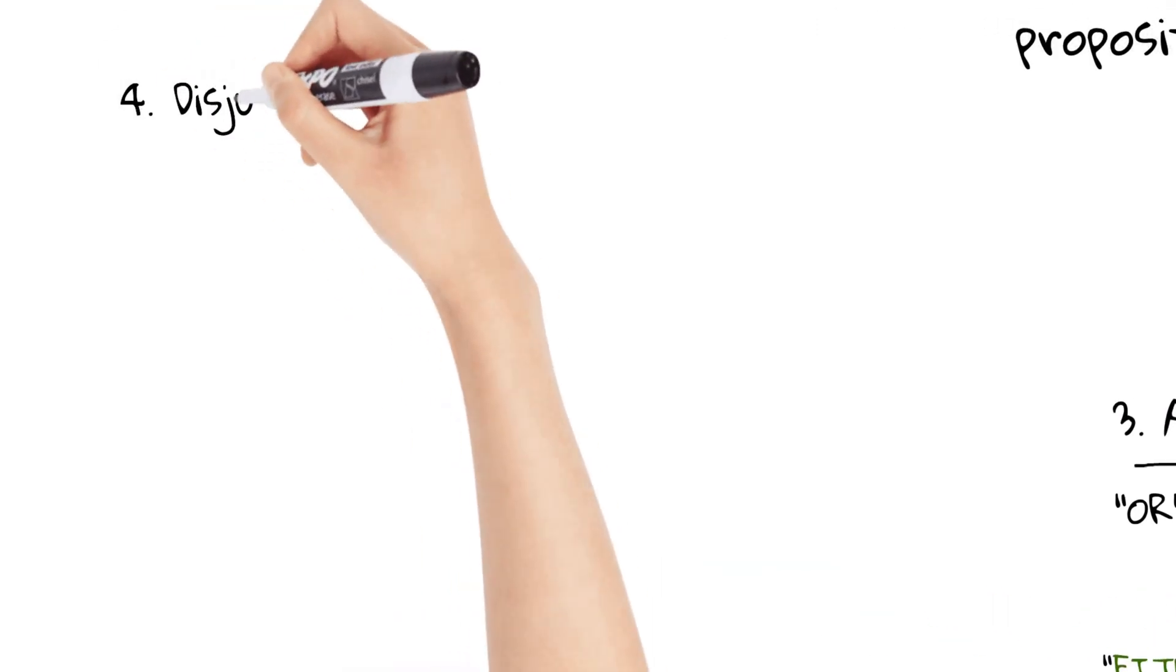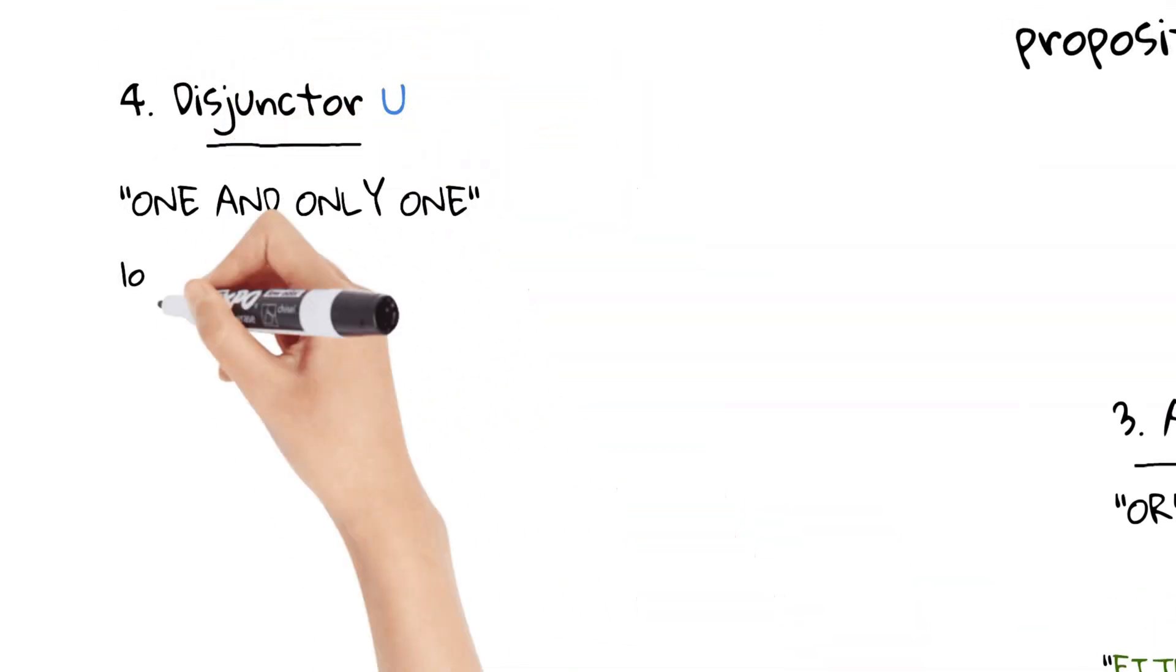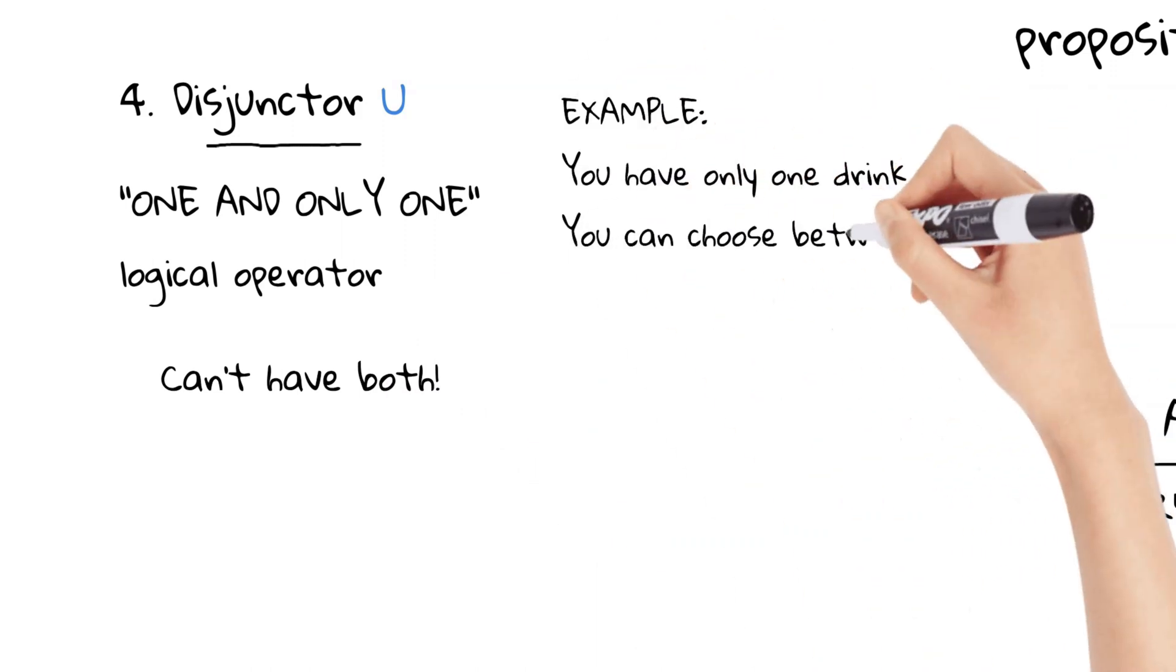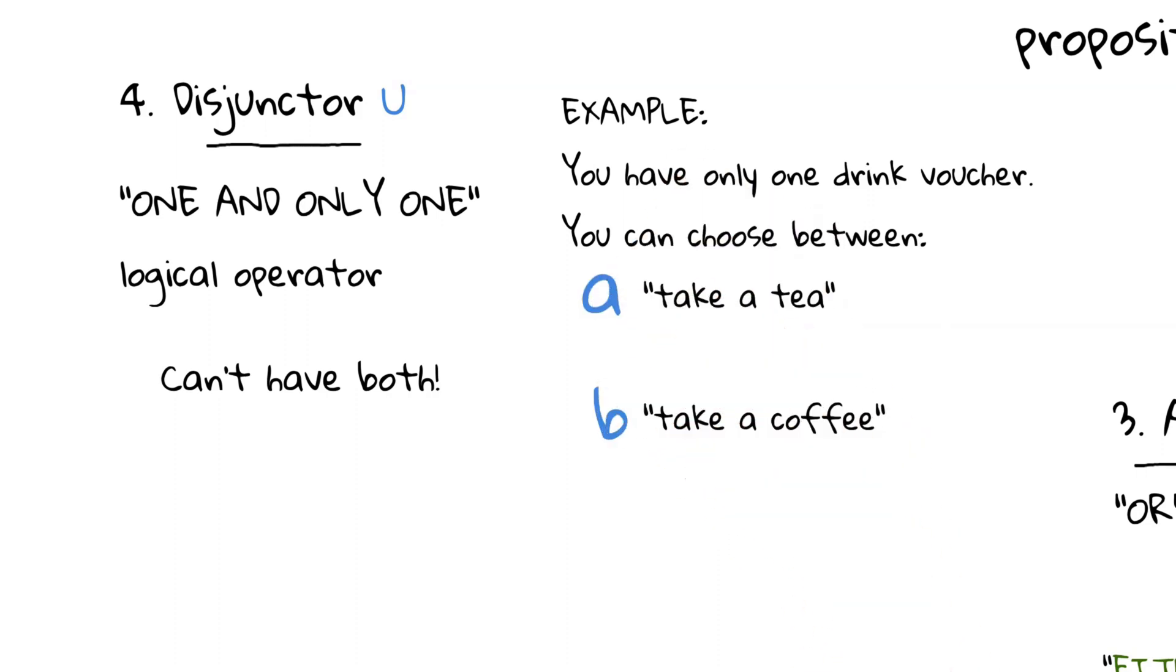Four, the disjunctor, or one and only one. The disjunctor is similar to the adjunctor, in that it is true if either proposition is true. However, unlike the adjunctor, it will give a false result if both propositions are true. Imagine you're at the bar, with only one drink voucher to choose between tea or coffee. You can choose either one, but you can't have both. This is how the disjunctor works. One and only one. Other ways of expressing it are either A or B; A or B, but not both; and precisely one.